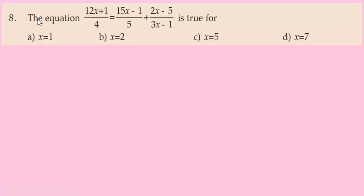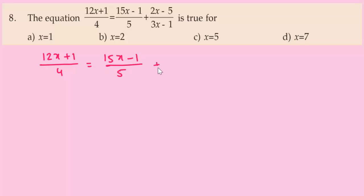Question number 8: the equation (12X+1)/4 = (15X-1)/5 + (2X-5)/(3X-1) is true for X equal to 1, 2, 5, or 7. We need to solve the equation.